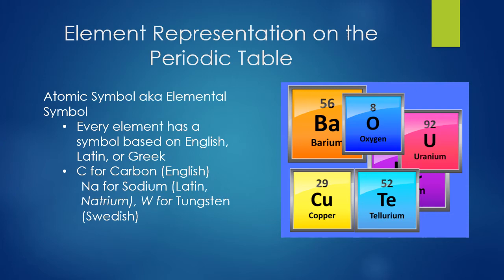Now let's look at the elements. Atoms are made up of three subatomic particles — protons, neutrons, and electrons — and atoms themselves make up elements. When looking at elements on the periodic table, they're represented by atomic symbols. Not all atomic symbols make sense for the English name of the element. For instance, sodium is represented by Na from the Latin word natrium, and tungsten is represented by W for wolfram in Swedish. Be aware that the symbol doesn't always match up with the element's name.